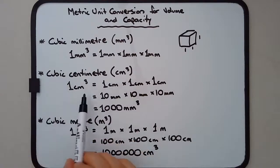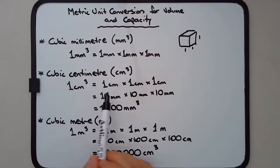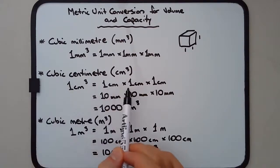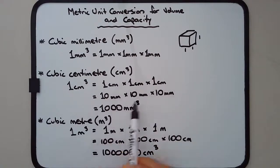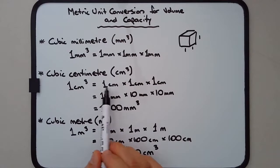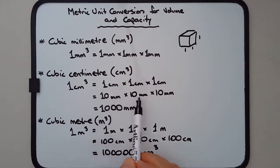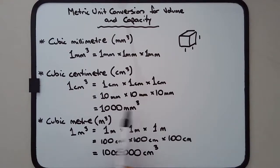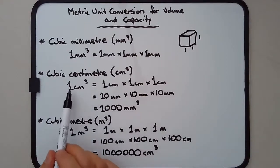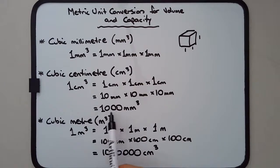A cubic centimeter is a cube that's one centimeter by one centimeter by one centimeter. Converting into millimeters, that's 10 mm × 10 mm × 10 mm, which gives you 1,000 cubic millimeters. So one cubic centimeter is equivalent to 1,000 cubic millimeters.